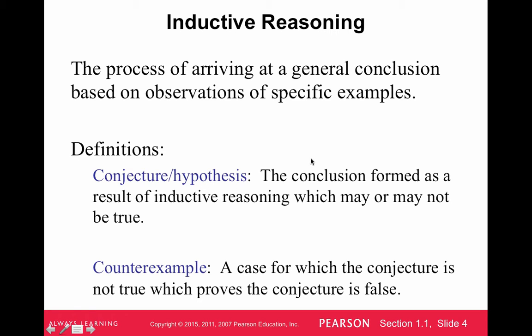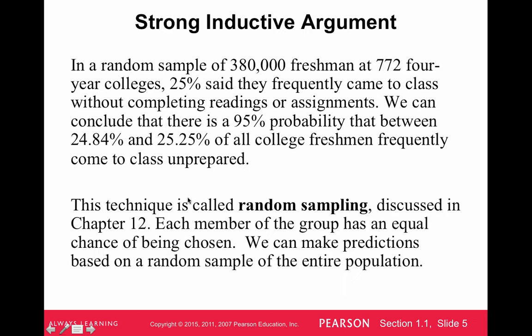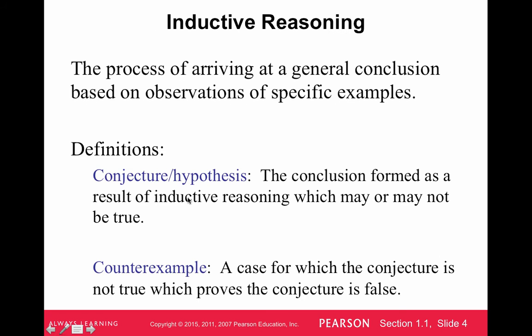The hypothesis or conjecture is the conclusion formed as the result of inductive reasoning, which may or may not be true. You've been noticing that this thing is happening, or you've noticed a few examples of this happening, so you come up with a hypothesis that this will always happen. A counter example is a case for which the conjecture is not true, by which it proves the conjecture false.